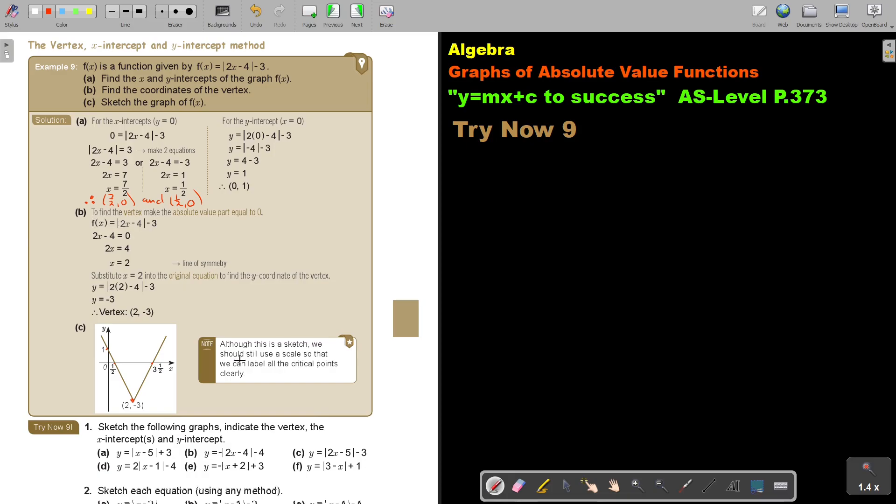Although this is sketch, we should still use a scale so that we can label all the critical points clearly. Do it still on a grid, 1 cm block, something like that. I just want to say, let's just think about it. If you look at that negative 3, so it means it's moved 3 units down. Can you see that? And then, if it was negative 4, so basically, it's just this position that's a little bit more influenced. But because it's negative, it's moved to the positive, to the right-hand side. Do you see that?